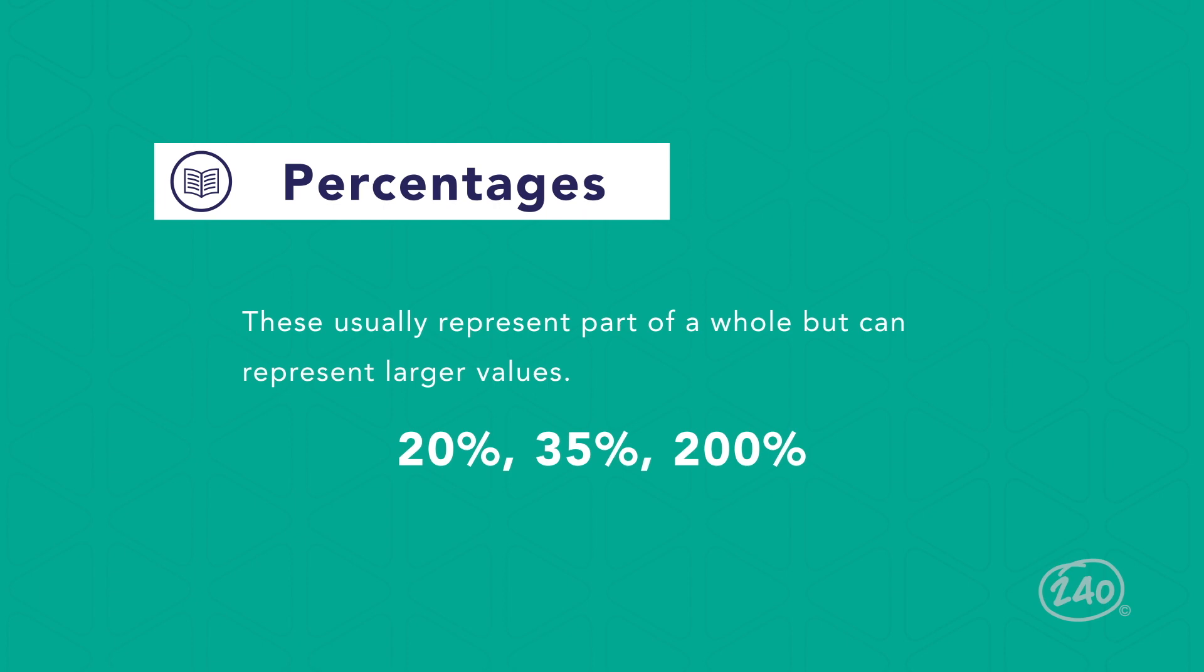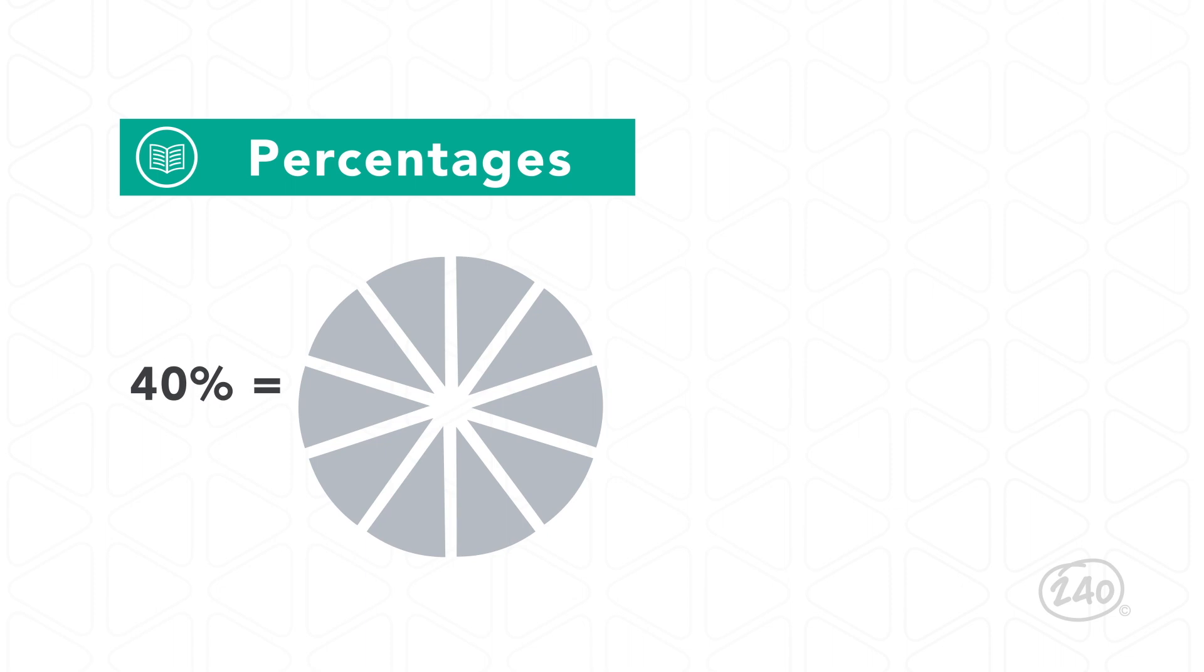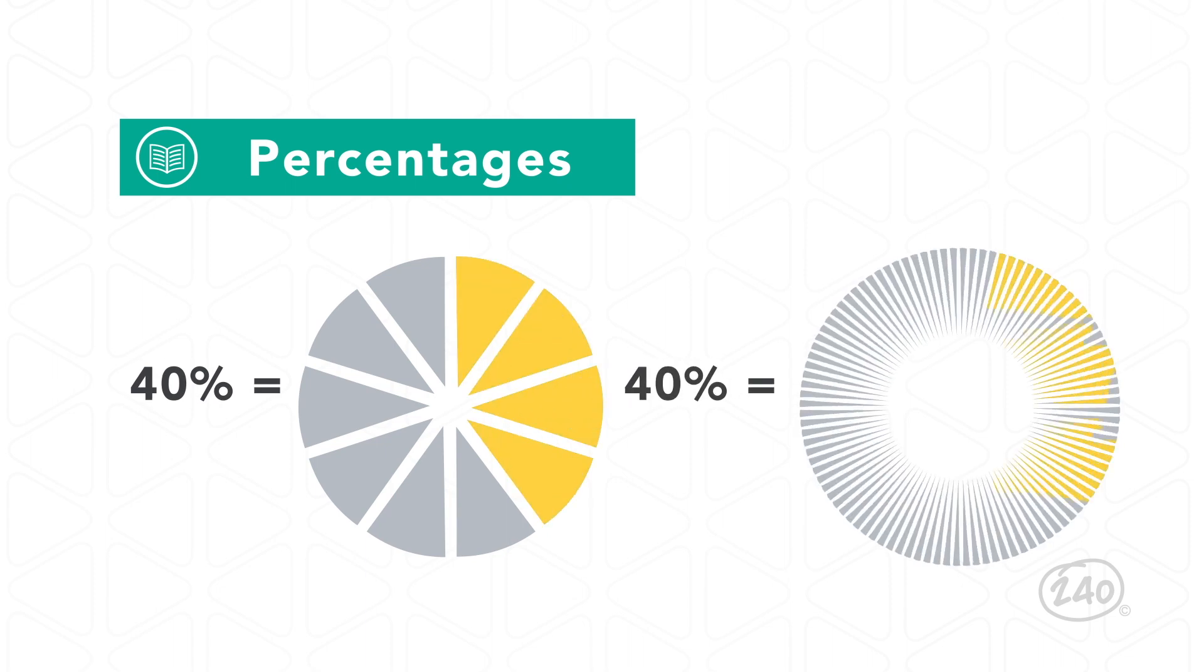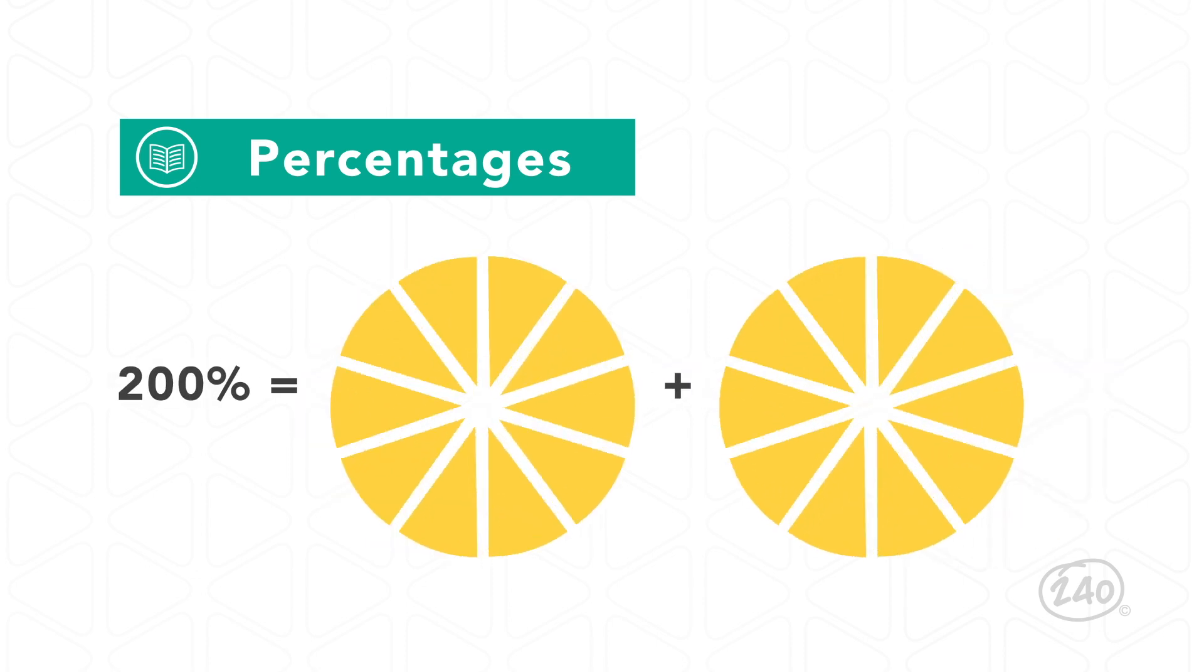Percentages usually represent part of a whole, but can represent larger values. 40%, for example, represents four out of 10, or 40 out of 100 parts of one unit. On the other hand, 200% means there are two whole units.